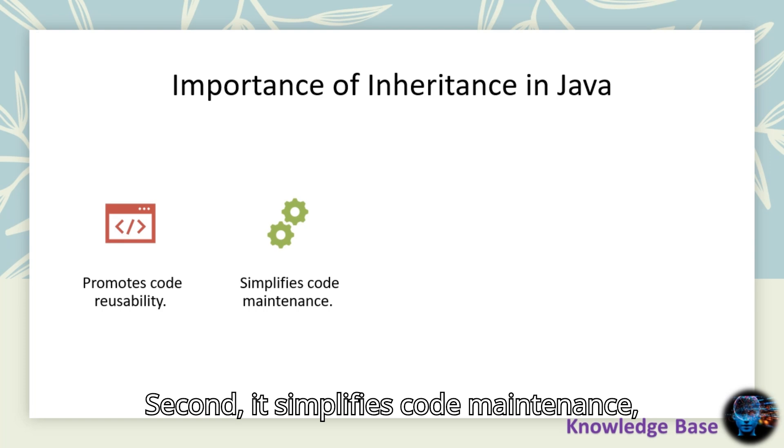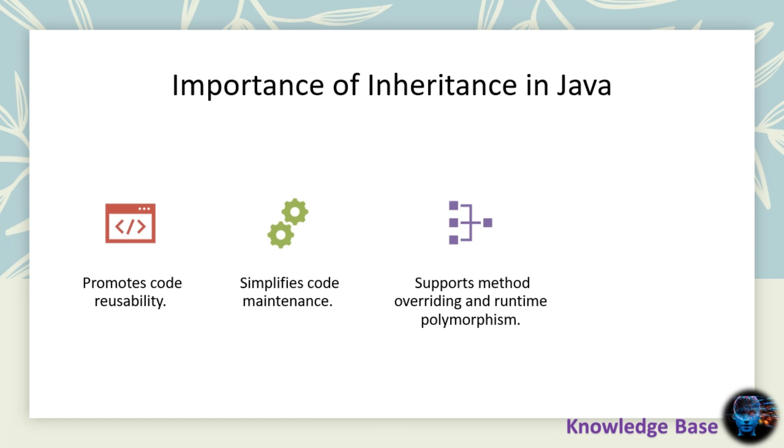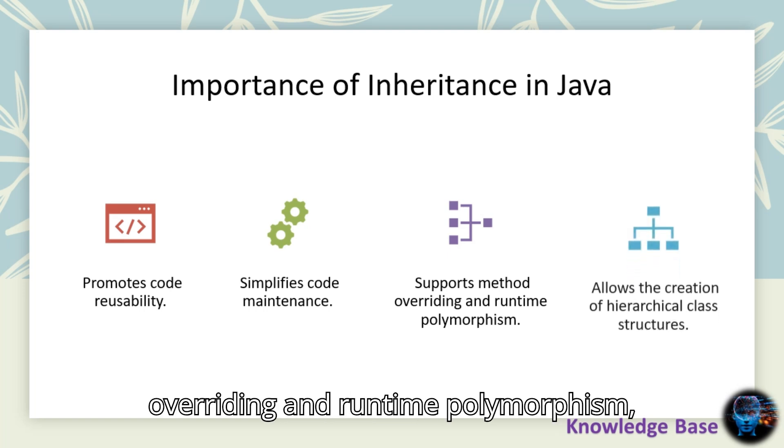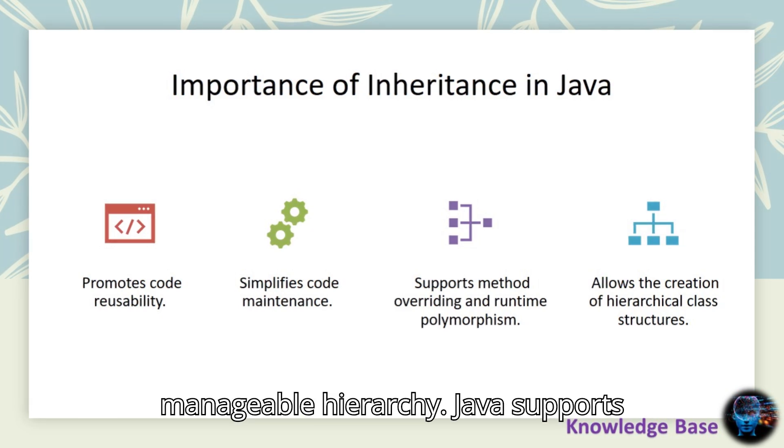Changes in the superclass can automatically propagate to subclasses. Inheritance also supports method overriding and runtime polymorphism, making your code more flexible and dynamic. Lastly, it helps in organizing code into a clear and manageable hierarchy.